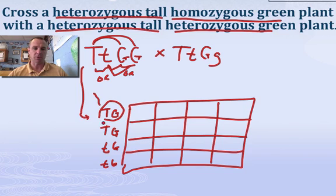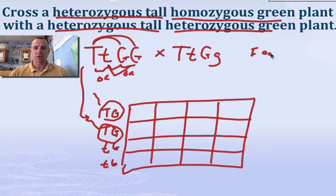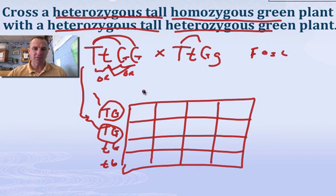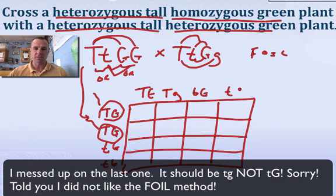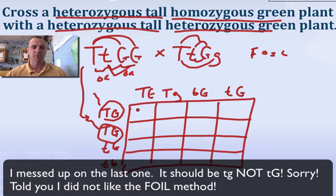Now let's put the other parent on the other side. You could do what's called the FOIL method: First, Outer, Inner, Last. I don't like using those terms, because 'first' means the first of each letter — if you have big T and big G. Outer means the outside two: big T and little g. Inner means the inside two: little t, big G. Last means the last of each letter: little t, little g. You'd end up with the same result, but if I do first and last I sometimes put two T's and two G's, which is totally wrong.